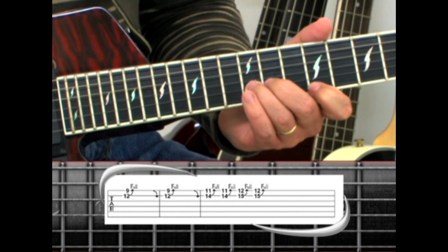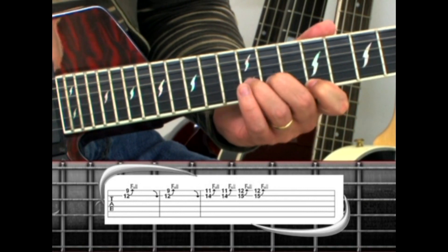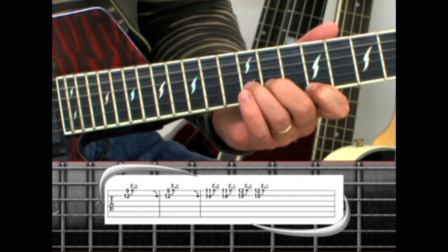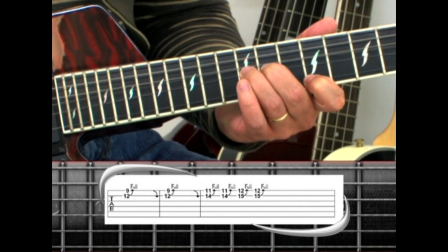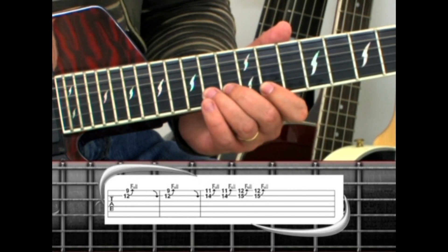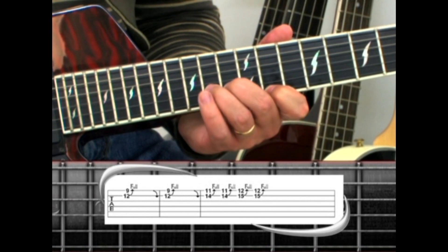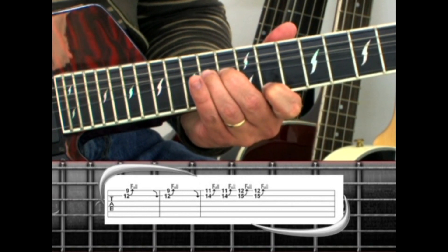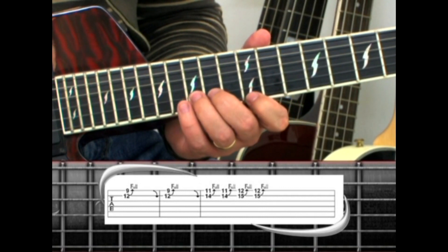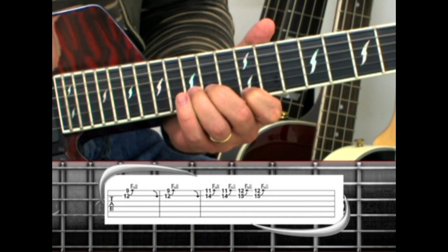Start on the first string 9th fret while bending the second string 12th fret. Hold and return the second string bend. Play it again, then move everything up two frets to 11 and 14 and play it twice bending the second string each time. Next move up one fret to frets 12 and 15 and play it twice with the bend. Then repeat the whole thing.